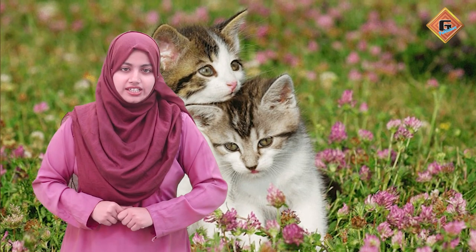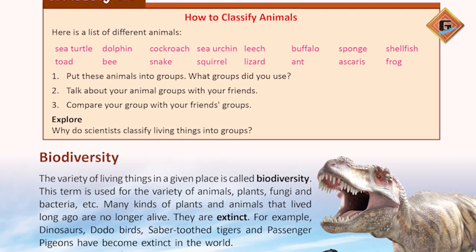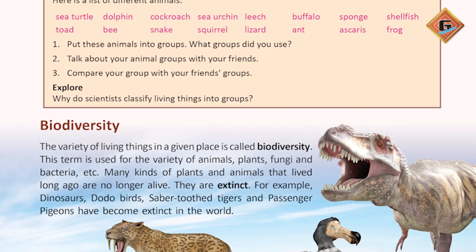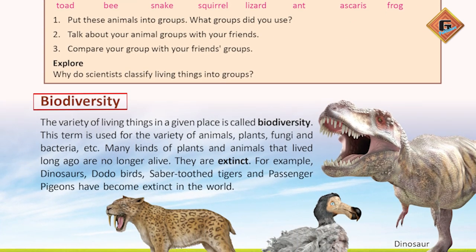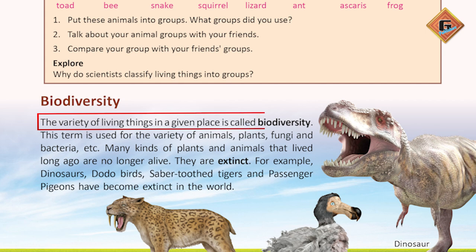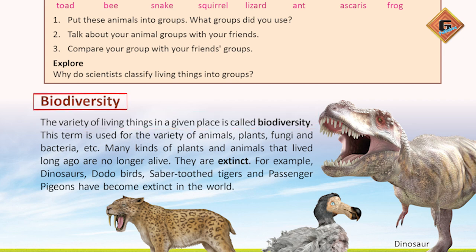Through this activity, we will go to our next topic, which is biodiversity. Diversity means variety, and biodiversity means variety of living things. You will know that in a specific area, living things can be varied, which we call biodiversity.